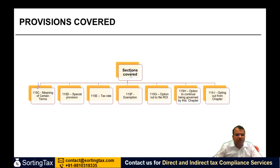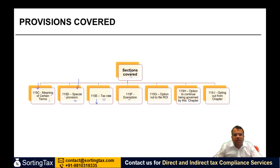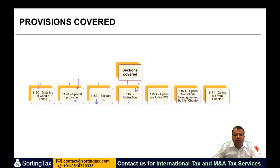There are seven sections we will cover. The first section is 115C, which defines certain terms — what is the meaning of NRI, what is the meaning of foreign exchange asset. Section 115C contains the special provisions applicable to non-resident Indians. The income covered under these provisions and the applicable tax rates are covered in section 115E. Certain exemptions available to non-residents are covered in 115F. Section 115G provides that if a non-resident Indian has only these two types of income and conditions are satisfied, he has the option not to file a return.